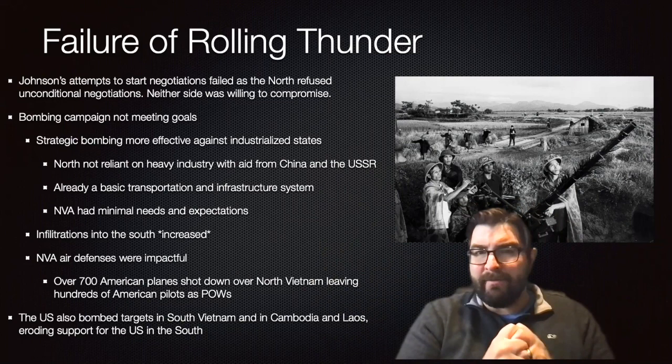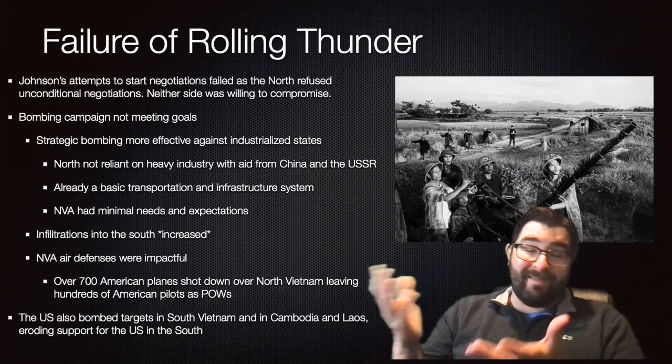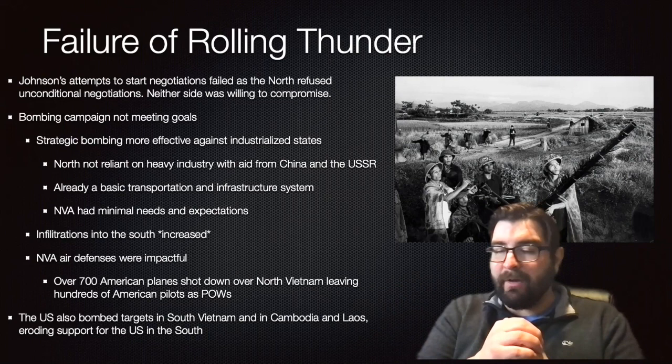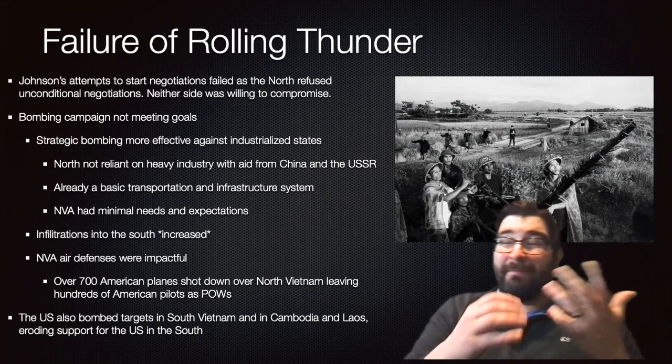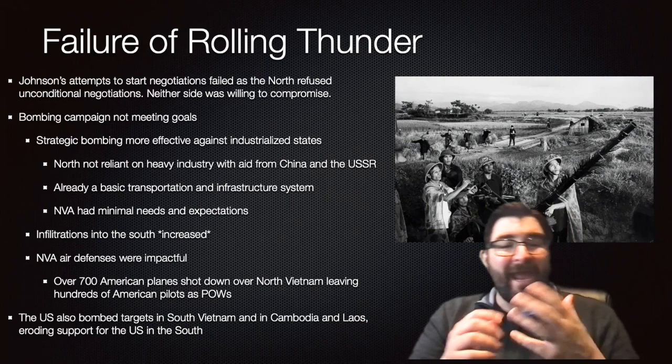North Vietnamese air defenses, largely supplied by the Soviet Union, were quite impactful in bringing down American planes. Over 700 American jets were shot down over North Vietnam, leaving hundreds of American pilots as prisoners of war. The Americans would also be bombing some targets in South Vietnam, Cambodia, and Laos, and this would begin to erode American public support.